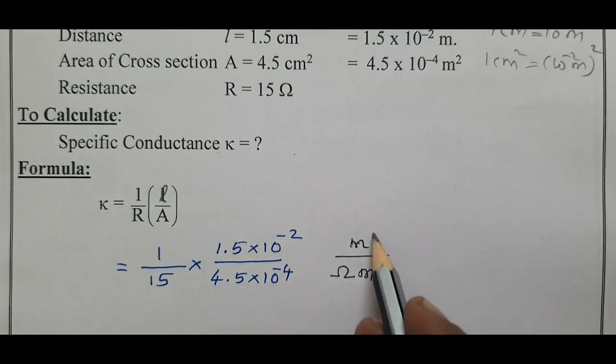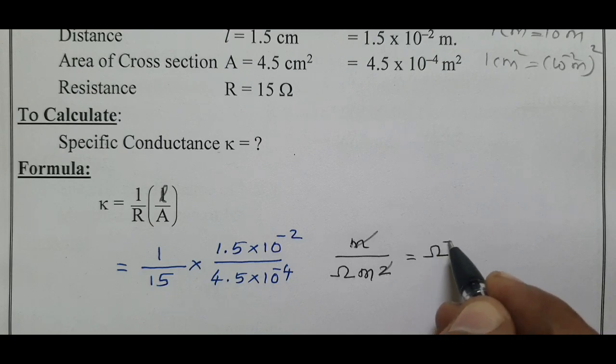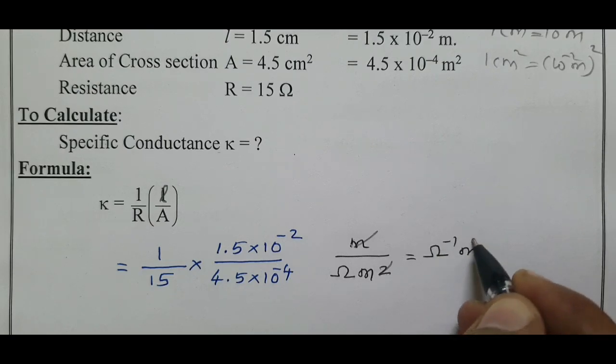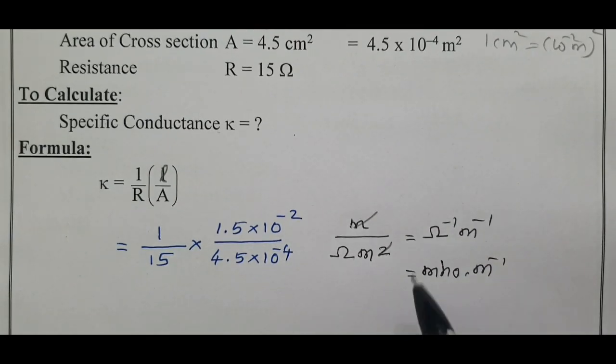1 meter, 1 meter get cancelled. When you bring the denominator quantity to the numerator, it becomes ohm power minus 1 meter power minus 1. Ohm power minus 1 is also called Siemen, capital S. Small s means second. Siemen meter power minus 1 is the unit of our specific conductance.